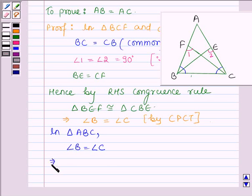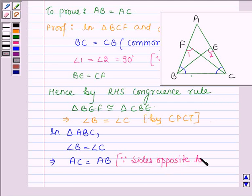This implies the side opposite to angle B which is AC is equal to the side opposite to angle C which is AB. Since sides opposite to equal angles are equal.